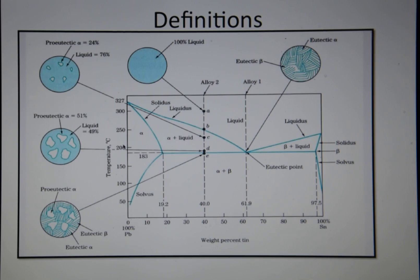And this area here is beta which is also a solid solution which is tin rich. This line here is called the liquidus line which separates the single phase liquid region from the two phase regions.